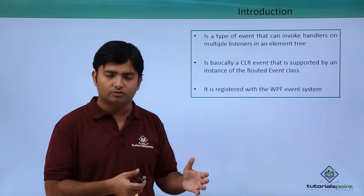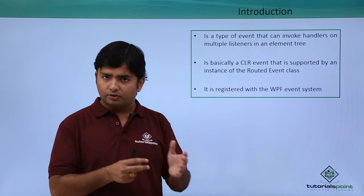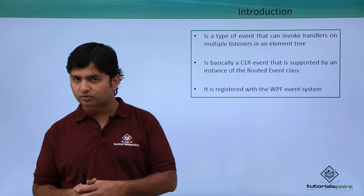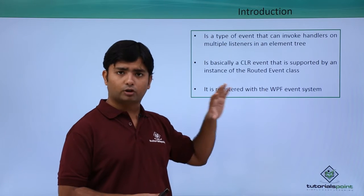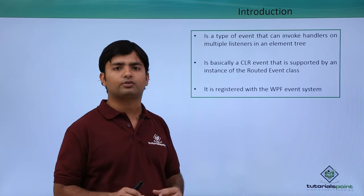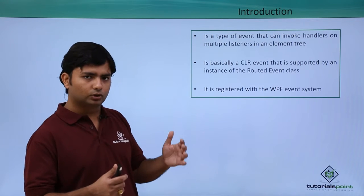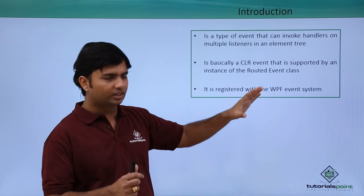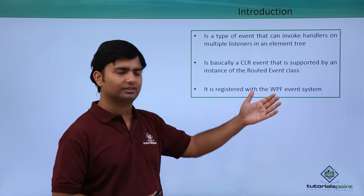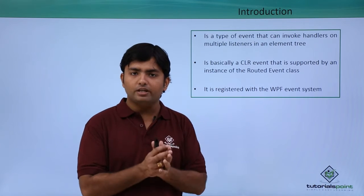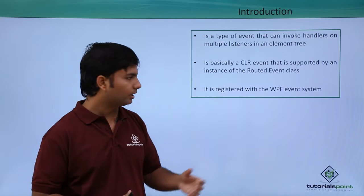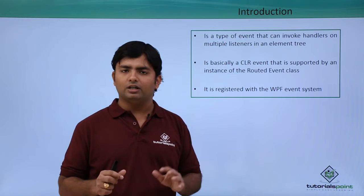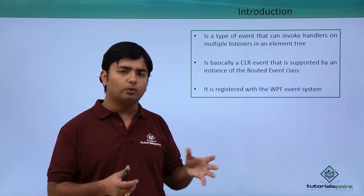In the previous example of the element tree structure, we saw that whenever the routing event takes place it will go through the visual tree structure. Here we are going to use that visual structure for performing the routing of events. A routed event is basically a normal CLR event that is supported by a routed event class. That routed event class helps the normal event become a routed event, and it is registered with the WPF event system so WPF ensures you can enjoy the routing feature.